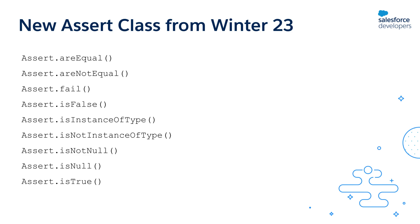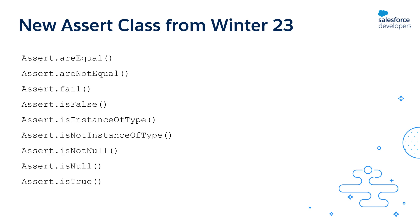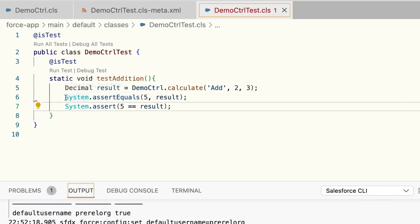In Winter '23, we introduced a new Assert class that contains multiple methods to improve the readability of your code and fit the exact conditions you are testing for. Here is a list of all the methods available: for example, Assert.isTrue to test if an expression is true, Assert.isFalse to test if an expression is false, and similarly isNull, isNotNull, areEqual, areNotEqual, and so on.